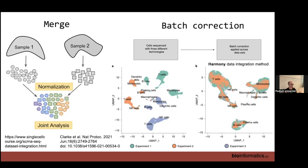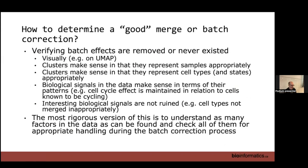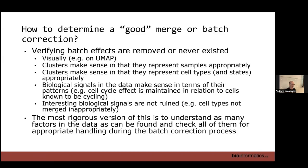Those are two real examples where we were able to just merge the data, which was appropriate for those datasets, but we had to prove it wasn't a systematic batch effect. So we have two options: merge the data or actually do see a big technical batch effect and need to do batch correction. Once we do batch correction, how do we know there's no remaining batch effect? One way is visually looking at the UMAP for big sample-specific differences. But we can also ask if the clusters we identify make sense in representing samples and cell types appropriately.